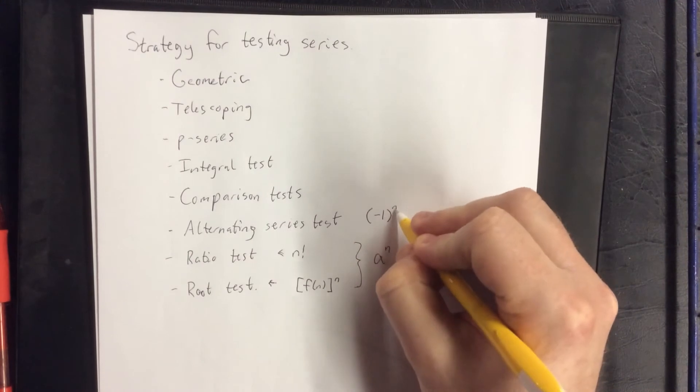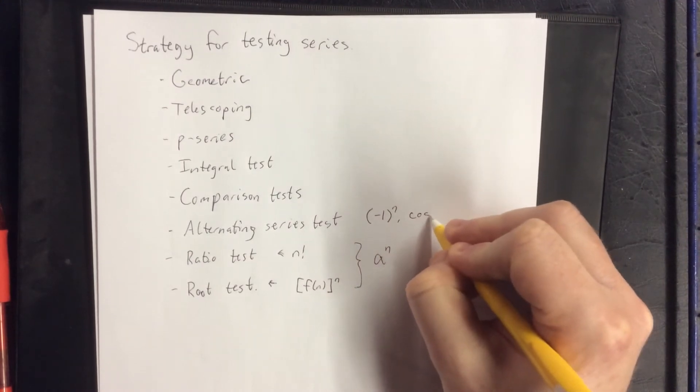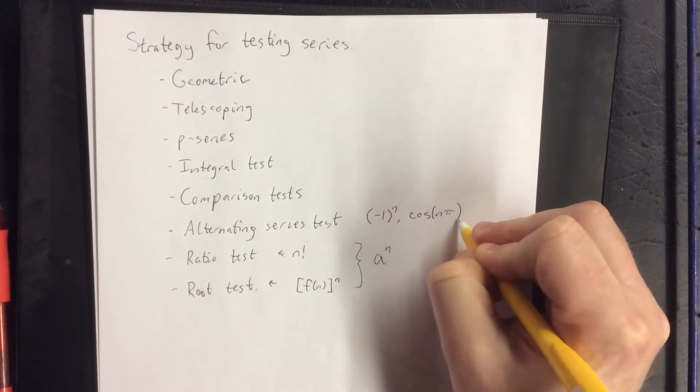Alternating series test: anytime you see some sort of alternator in there, that would be a great one to use. So a negative one to the n or cosine of n pi.